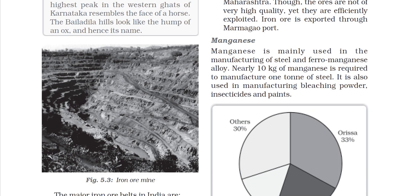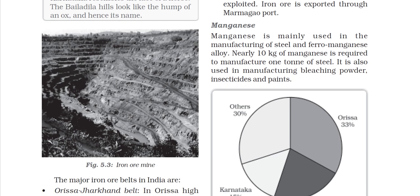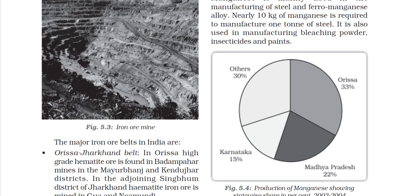Now let's talk about manganese, which is mainly used for manufacturing steel and ferro-manganese alloy. Nearly 10 kg of manganese is needed to manufacture 1 ton of steel. Manganese is also used in manufacturing bleaching powder, insecticides, and paints.